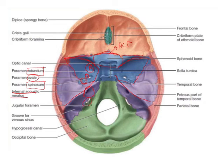Then we have the jugular foramen just behind this. The jugular foramen gives passage to three cranial nerves — 9, 10, and the spinal part of your 11th. So this is how we can remember the different foramina.